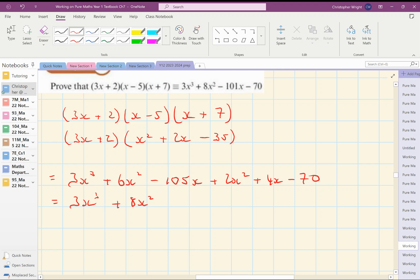Minus 105x plus 4x is minus 101x. And then I've got minus 70 at the end. And let's just have a look.